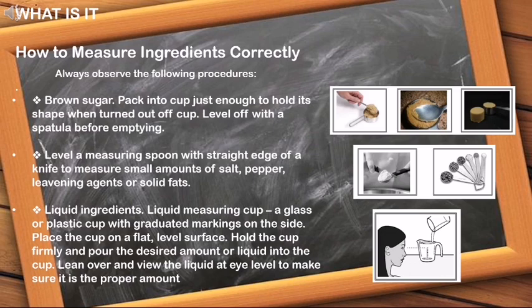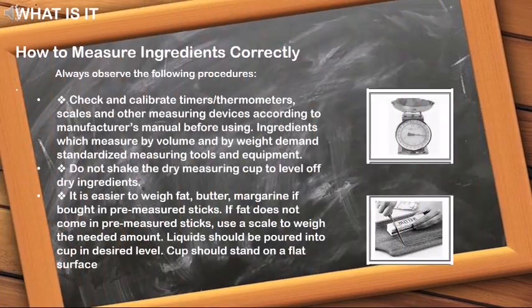Liquid ingredients use a liquid measuring cup — a glass or plastic cup with graduated markings on the side. Place the cup on a flat level surface, hold the cup firmly, and pour the desired amount of liquid into the cup. Lean over and view the liquid at eye level to make sure it is the proper amount. Check and calibrate timers, thermometers, scales, and other measuring devices according to the manufacturer's manual before using.